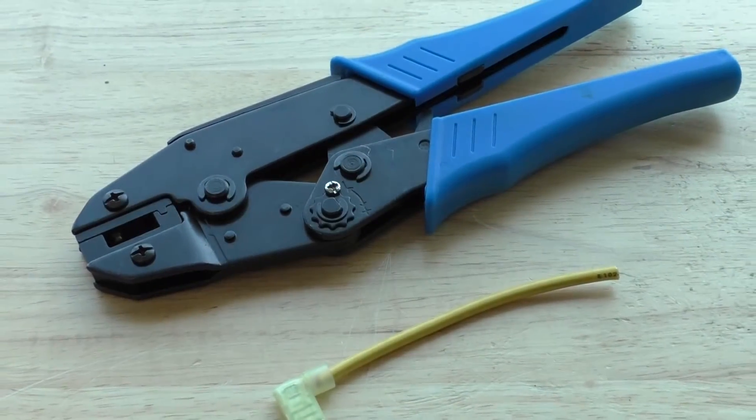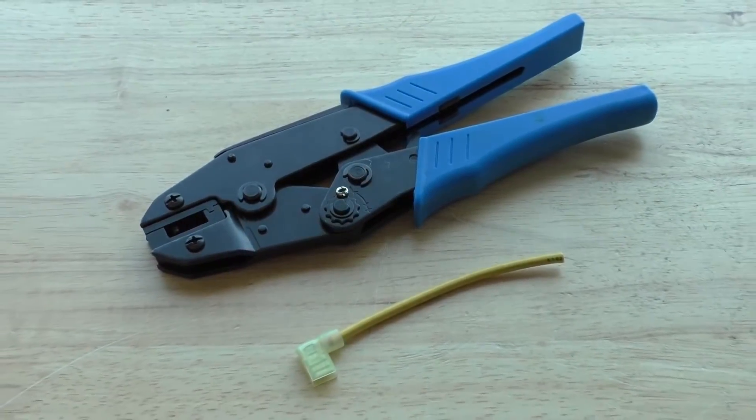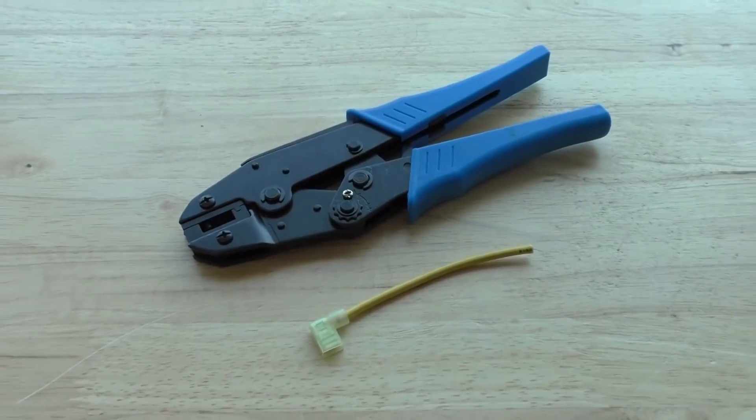And that will do it for the FDT-158 crimping tool. Everything shown here can be found on our website at www.ferrelsrec.com.